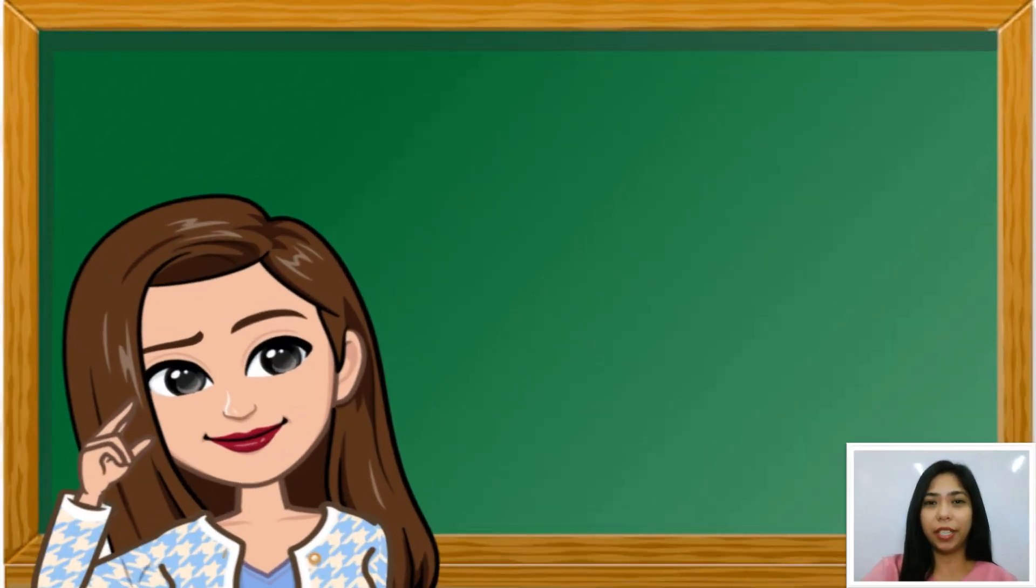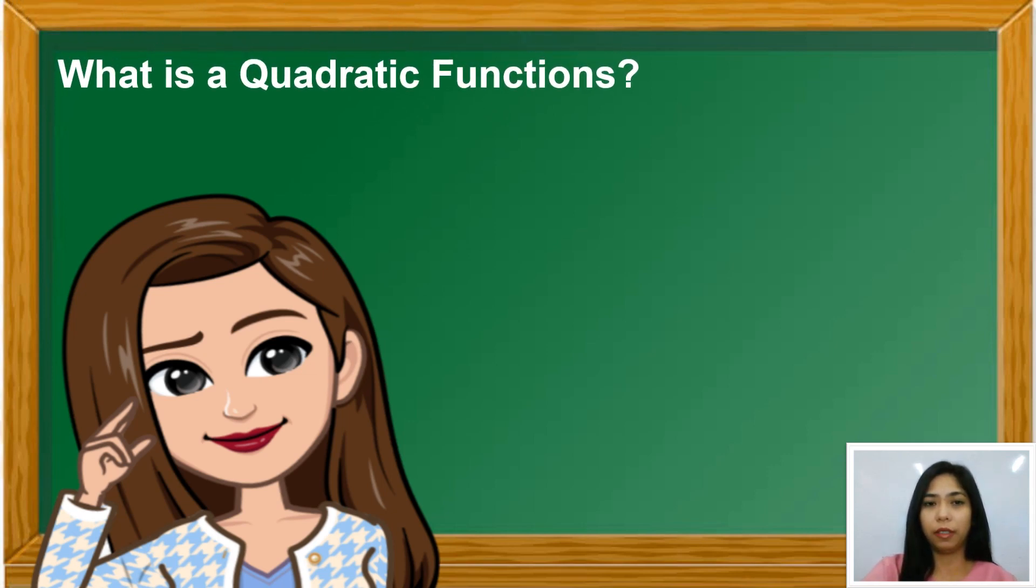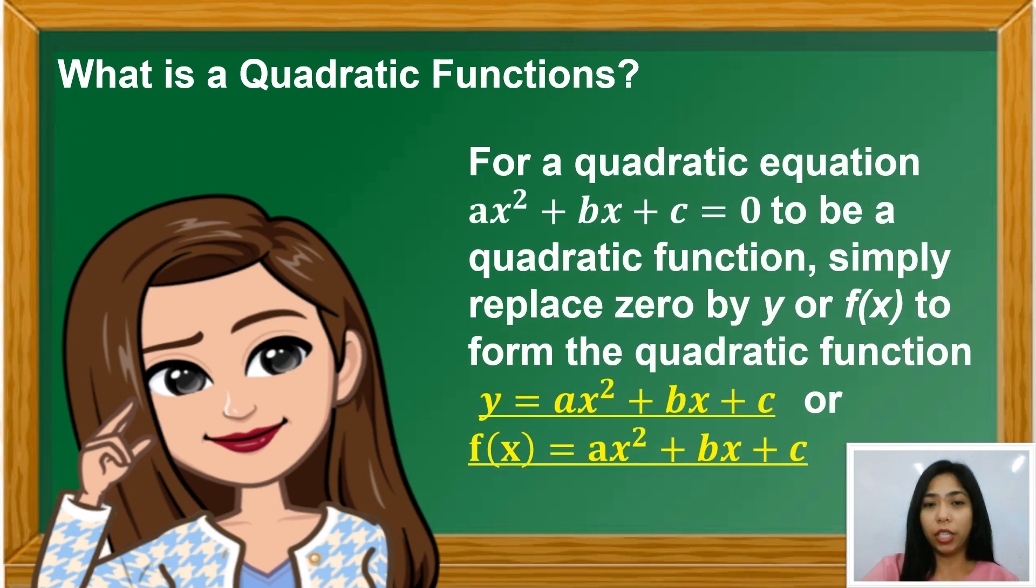How did you find the preceding activity? I hope that you are now ready to learn more about quadratic functions. For a quadratic equation, AX squared plus BX plus C equals 0 to be a quadratic function, simply replace 0 by Y or f(x) to form the quadratic function Y equals AX squared plus BX plus C or f(x) equals AX squared plus BX plus C.